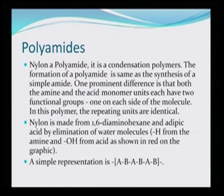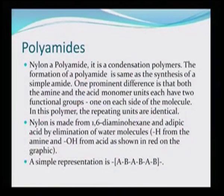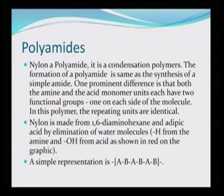Polyamide nylon is a condensation polymer. The formation of a polyamide is the same as the synthesis of a simple amide — it mainly has the C=O and NH2 groups in subsequent order. One prominent difference is that both the amine and the acid monomer units each have two functional groups, one on each side of the molecule, so the repeating units are identical. Nylon is made from 1,6-diamino hexane and adipic acid by elimination of a water molecule, where H from the amine and OH from the acid are removed.